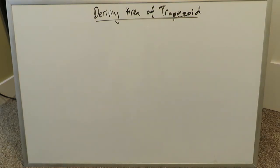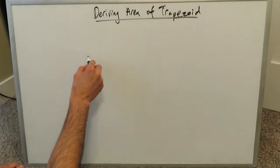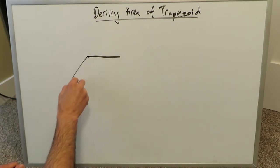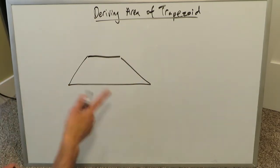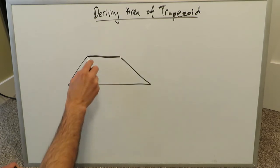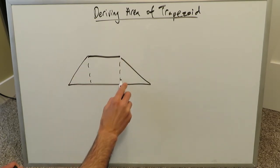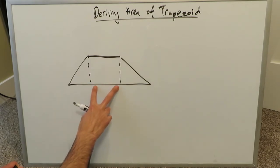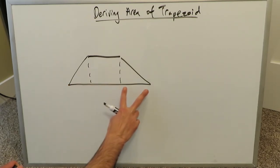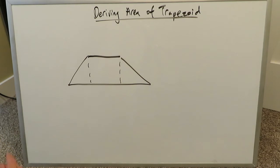It depends on how you draw the trapezoid or what your basis for the derivation is. Here we want to look at it in terms of integral calculus. If you were to draw a relatively square-shaped trapezoid, you have a square over here, and this dimension is equal to this dimension, which is equal to this dimension, which is equal to that dimension.